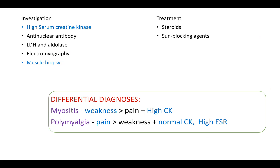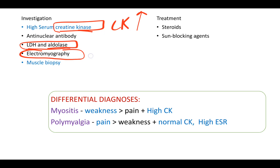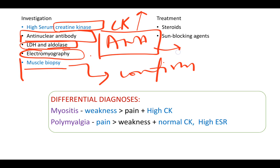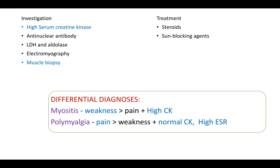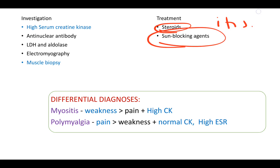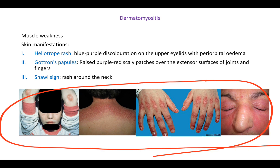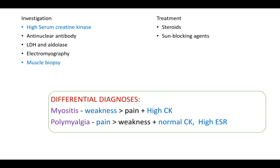Investigations for dermatomyositis are similar to polymyositis: elevated CK, LDH, and aldolase due to muscle inflammation; electromyography; and muscle biopsy as the most confirmatory test. ANA (anti-nuclear antibody) is also positive, as it is in many autoimmune conditions. Treatment is steroids for the inflammation, and sun-blocking agents are given to help reduce the skin manifestations. Differential diagnosis remains important here as well.